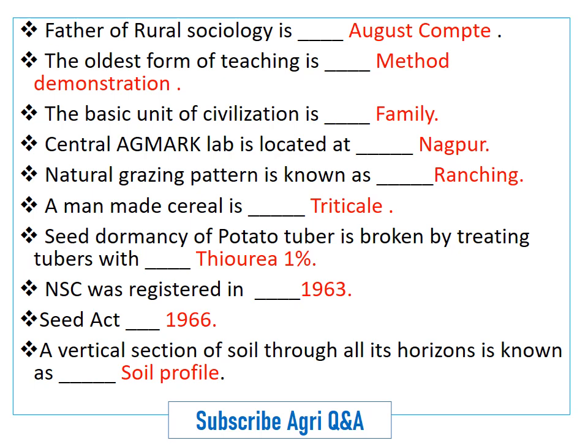Seed dormancy of potato tuber is broken by treating tubers with thiourea 1%. The National Seed Corporation was registered in 1963. The Seed Act was passed in 1966.